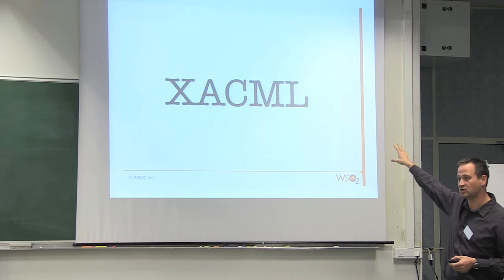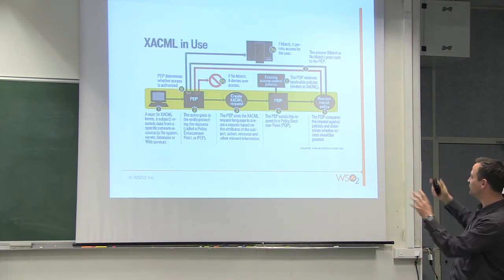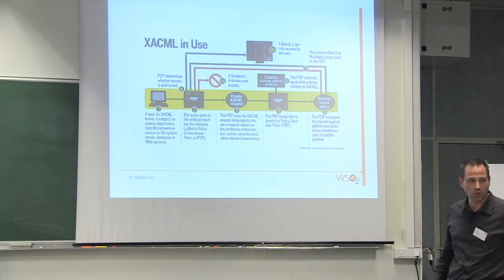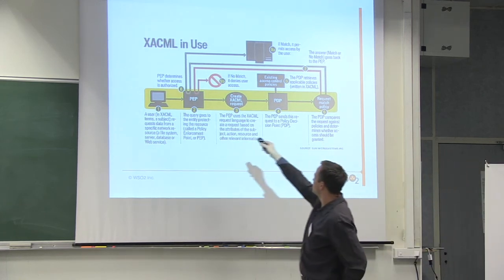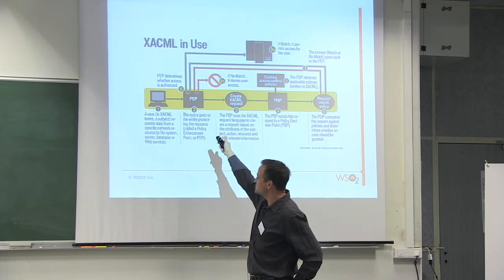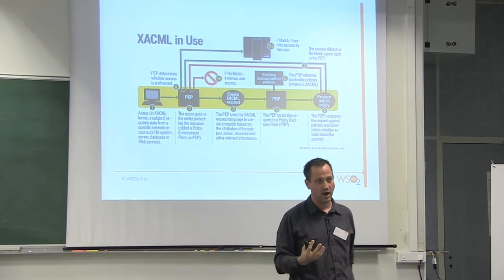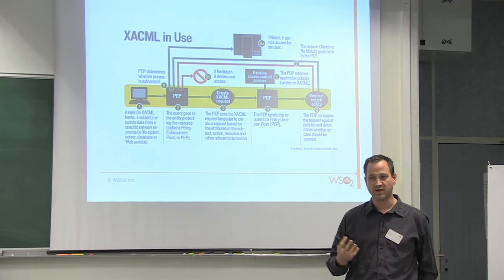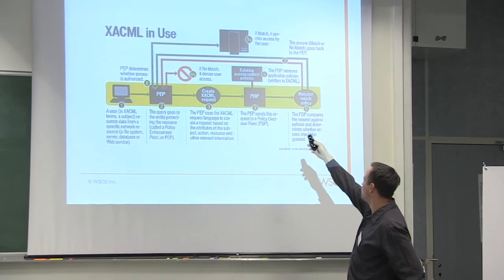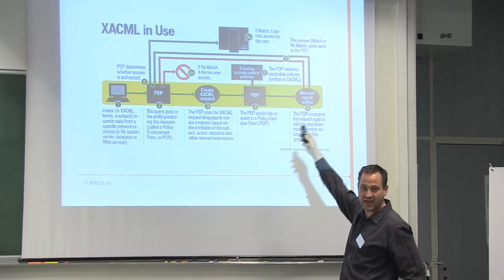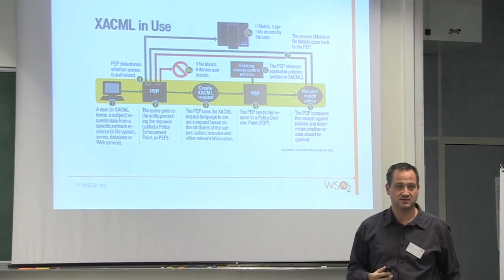If you haven't come across XACML, I recommend you look at it. The basic idea is that there's a policy enforcement point — in API terms, that would be your API gateway — that enforces access and talks to a back-end policy decision point.